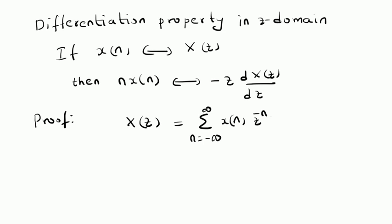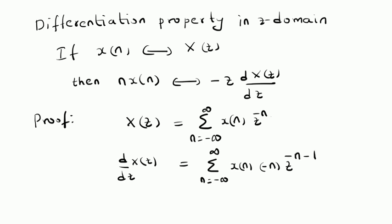We apply the derivative on both sides, that is we differentiate with respect to Z on both sides. We get d by dZ of X of Z on the left hand side, and on the right hand side, X of n is independent of Z, so X of n remains as is, and the derivative of Z power minus n is given by minus n multiplied by Z power minus n minus 1.